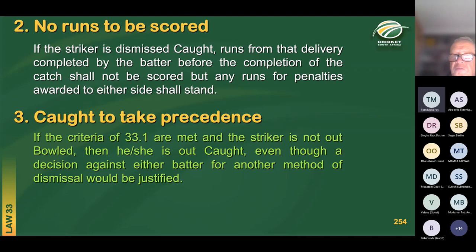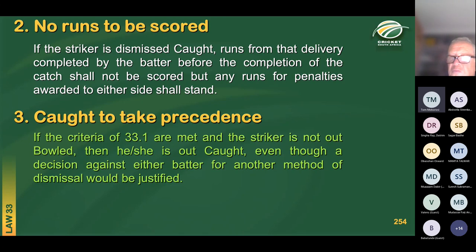Caught is the little boss of modes of dismissal. The law says that if the criteria of 33.1 are met and the striker is not out bowled, then he or she is out caught, even though a decision against either batter for another method of dismissal would be justified. So if a batter is not out bowled, and one of the other options is caught, the striker will be out caught.